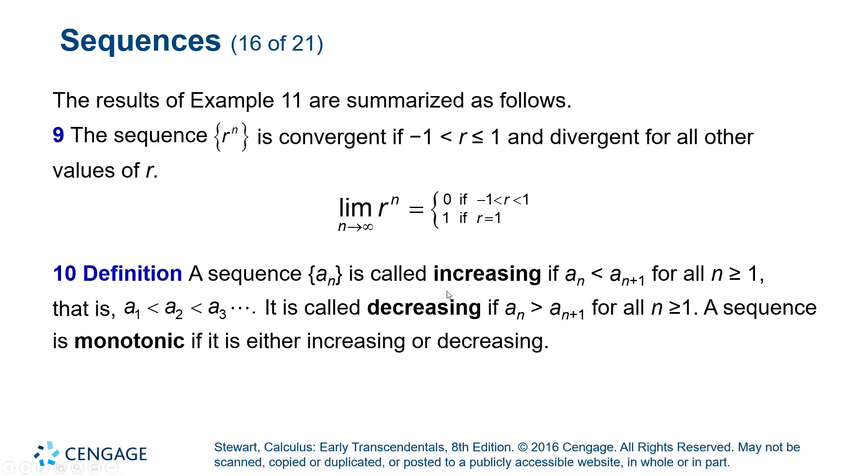A sequence is called increasing if every single term of the sequence is larger than the previous term. So the way they write that is a sub N is less than a sub N plus one. So if you have terms one, two, three, and four, this is saying four is bigger than three, three is bigger than two, and then the second term is bigger than the first term. So as you go from left to right, or as you're increasing from N equals one to infinity, the terms consecutively get larger and larger and larger. As long as that's true, we say the sequence is increasing.